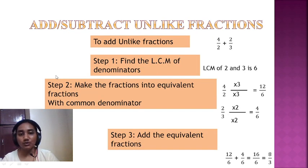And now to add the unlike fractions, the first step is make the denominator same by doing the LCM of denominators. In second step, make the fractions into equivalent fractions with the same common denominator. So that we can do by multiplying with particular number to make the denominator same, and in the final step add the equivalent fractions. If it is subtract, do the minus with the same procedure.